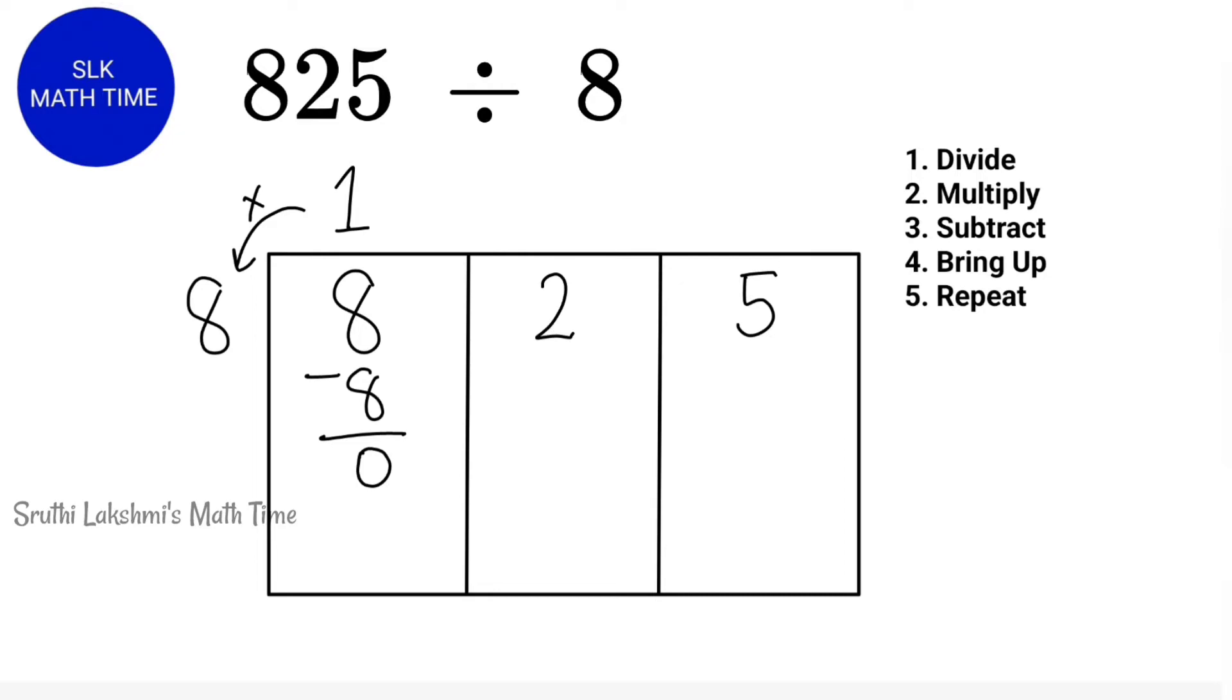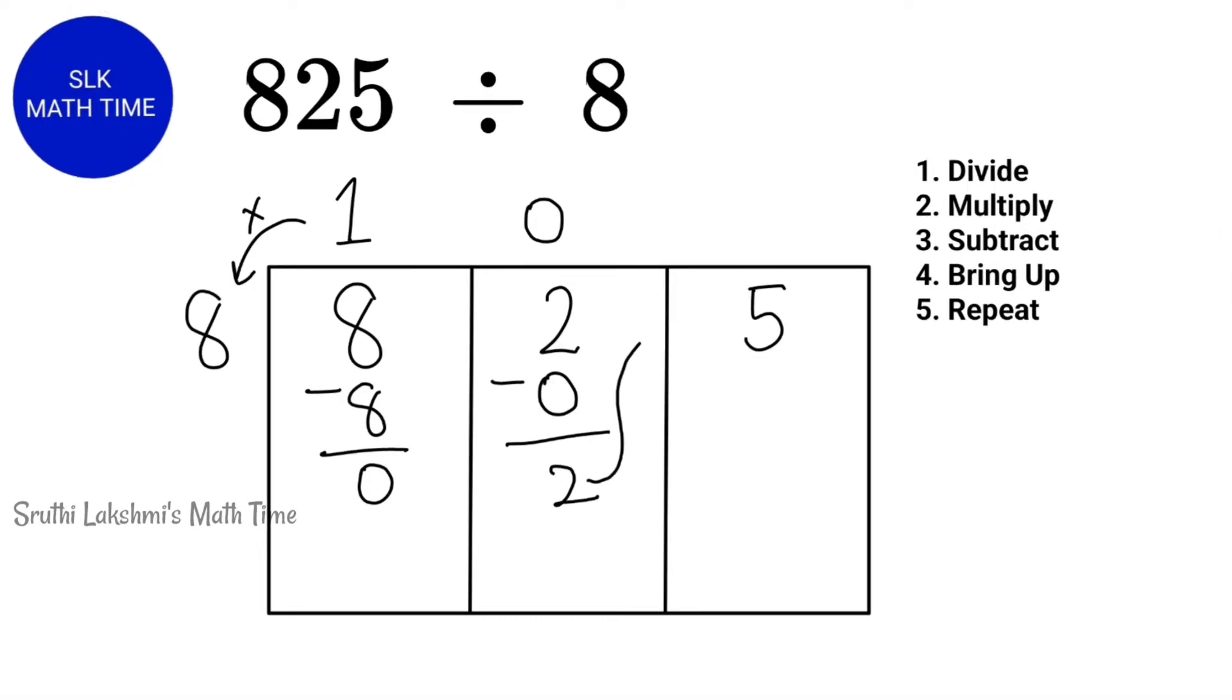Now, we are going to repeat these steps until we reach the last digit. So, now, how many 8's can fit in 2? Well, 0 eights can fit in 2. So, 8 times 0 is 0 and 2 minus 0 is 2. Now, we are going to bring this 2 up over here. So, 25. How many 8's can fit in 25? 3 eights can fit in 25. So, 8 times 3 is 24. Now, let's subtract. 25 minus 24 is 1.